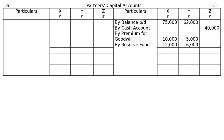Next one is general reserve — by general reserve Rs 18,000. Please note: write it as general reserve, not reserve fund. That is Rs 18,000 in the old ratio of 2 to 1, that is Rs 12,000 to Rs 6,000. This general reserve will not be shown in the balance sheet. Next, to cash account for withdrawal of goodwill premium: X got Rs 10,000 and Y got Rs 5,000 respectively. It will be half withdrawn — X's capital account debited half of Rs 10,000, that is Rs 5,000. Y's capital account debited Rs 2,500, to cash account Rs 7,500.